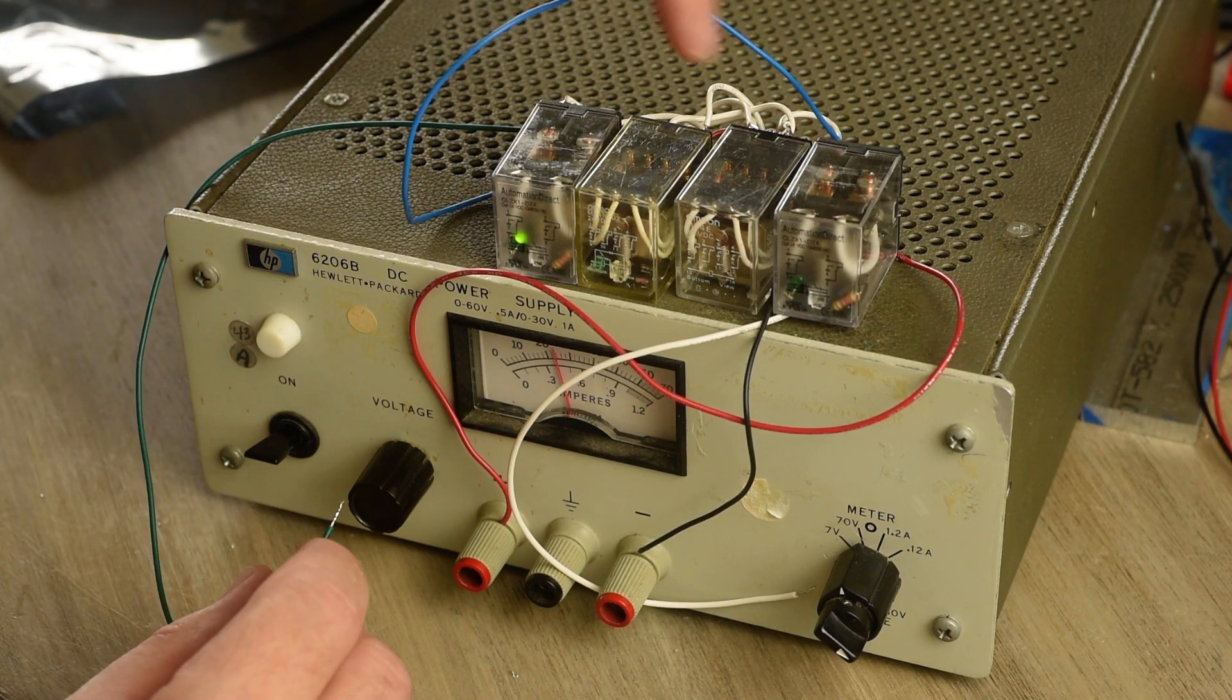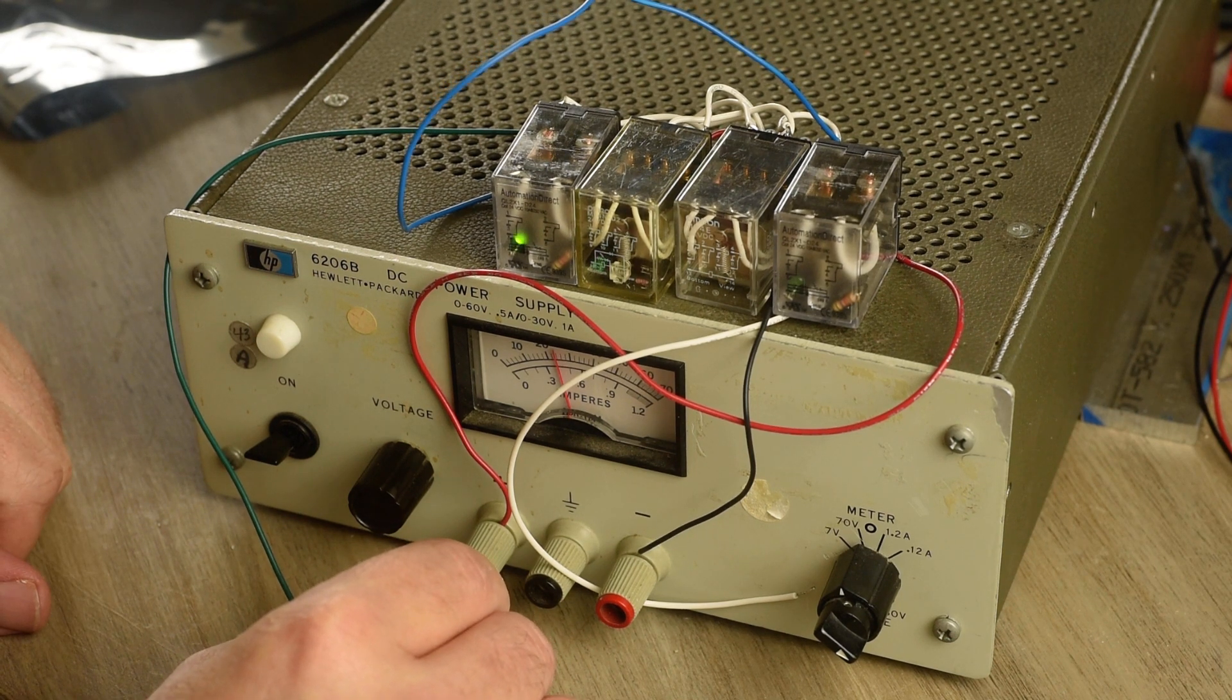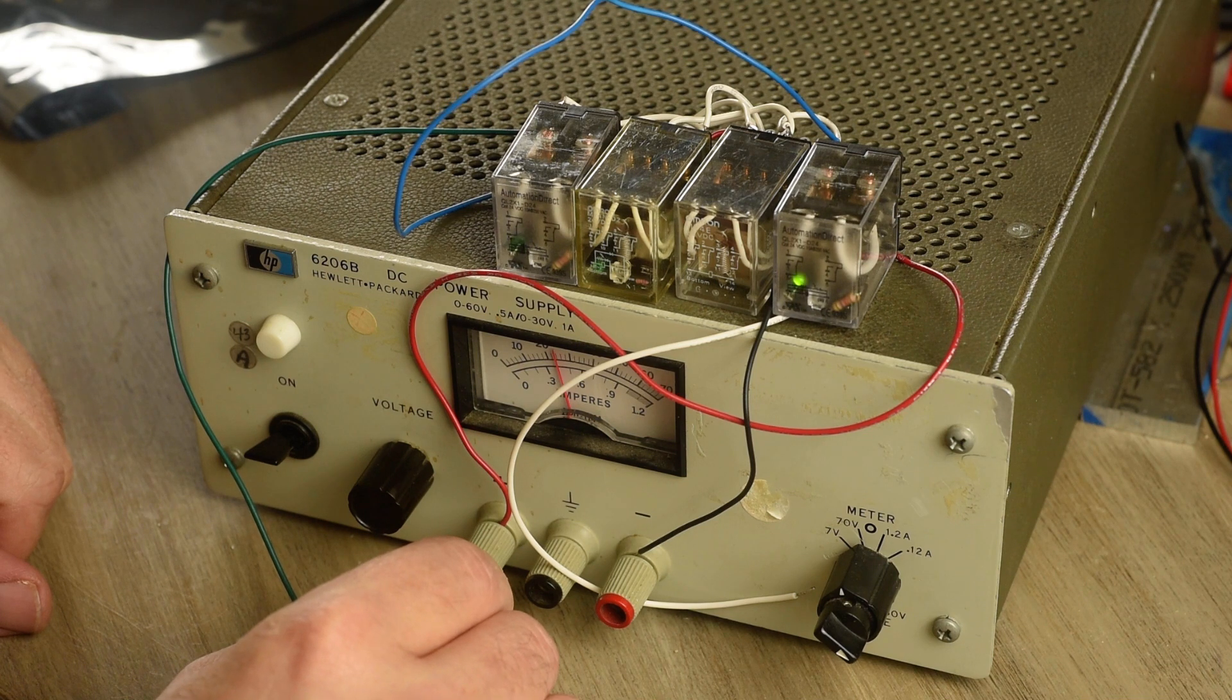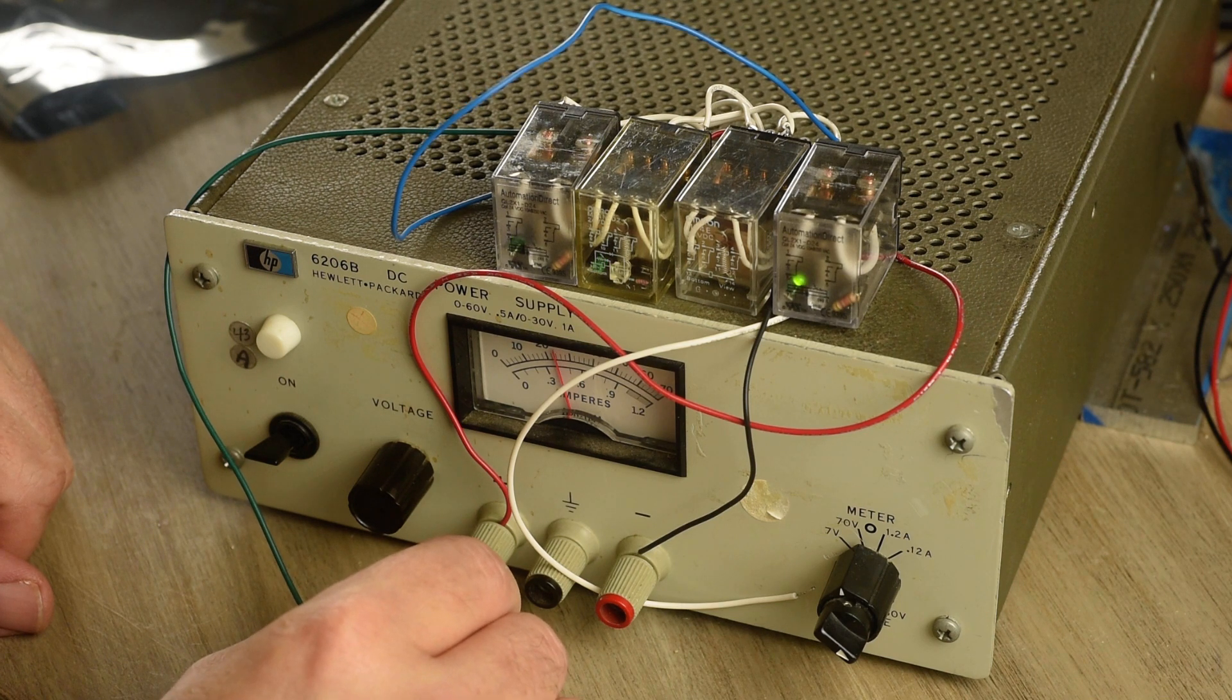So now not Q output is tied to D input. Look at that, doesn't matter how long I assert the clock. Transfers on the edge.